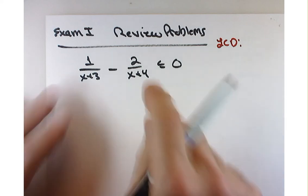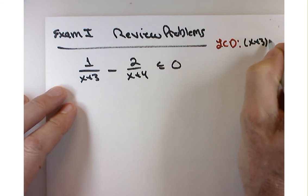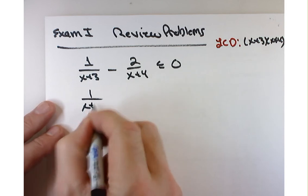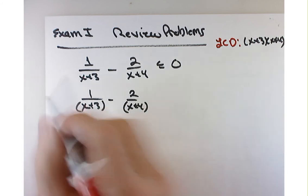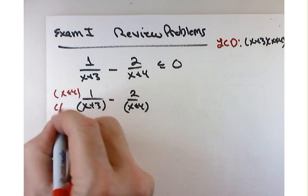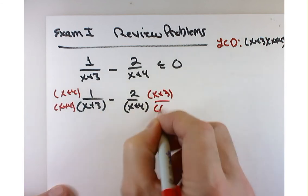So what we're going to do is get the LCD here. Somebody gave it to me: x plus 3 times x plus 4. So let me do that. 1 over x plus 3 minus 2 over x plus 4, this way. I'll multiply this by x plus 4 over x plus 4, and this by x plus 3 over x plus 3.